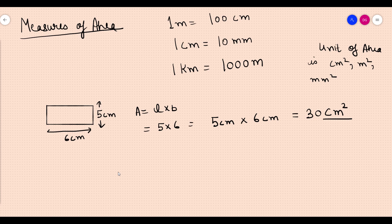Another unit we have is the hectare. Hectare is the most commonly used unit for measuring large land areas. If someone has a lot of land and is very rich, they measure land in hectares. For example, five meters into six meters gives 30 meter squared.